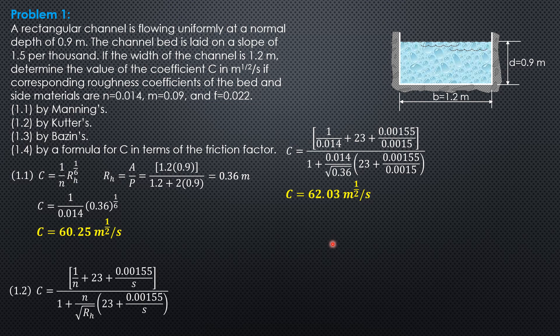Then, third, by Basin's, C is 87 over 1 plus M over square root of hydraulic radius. 87 over 1 plus M over square root of hydraulic radius. So substitute, 87 over 1 plus 0.09 over square root of 0.36. So C is 75.65 meter to the 1.2 per second.